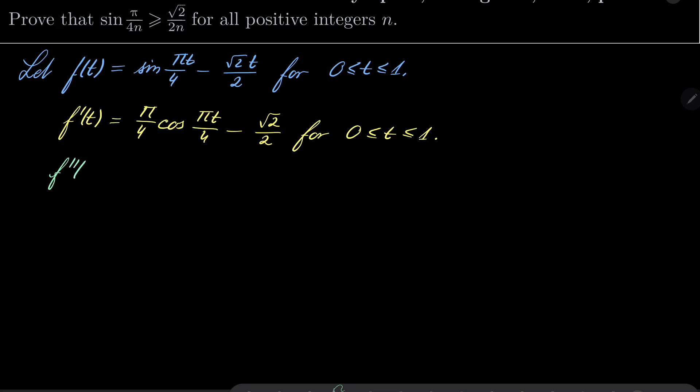And the second derivative will be -(π/4)² sin(πt/4). The derivative of cosine is minus sine, so I have minus here. And this constant vanishes. For 0 ≤ t ≤ 1.